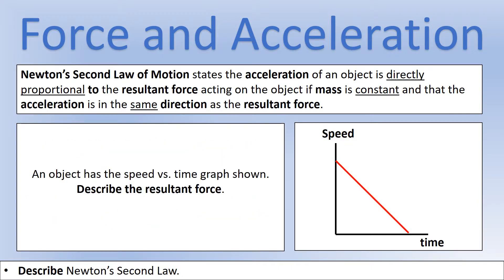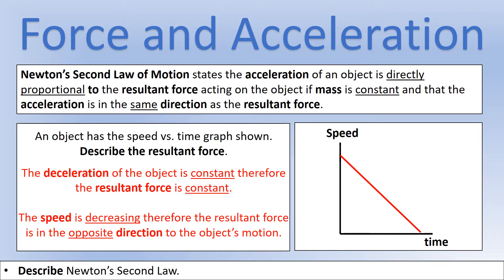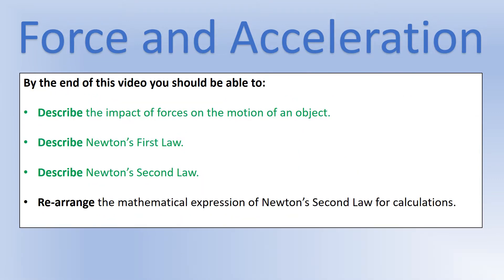One last scenario — another speed versus time graph: describe the resultant force. We can see that the speed is decreasing, so we know this object is decelerating. It's a straight-line graph, so the deceleration is constant, which tells us the resultant force is constant. The other thing we can tell is that the resultant force must be in the opposite direction to the object's motion, because speed is decreasing.